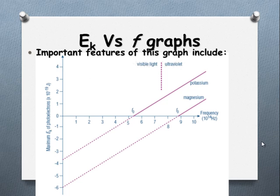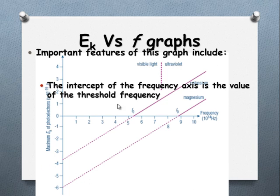The intercept here is the threshold frequency. It's the frequency that must be achieved before we can actually eject electrons with any kinetic energy. If it's less than this, we haven't given it enough energy before they get a positive kinetic energy.